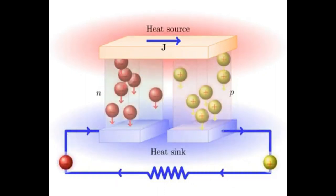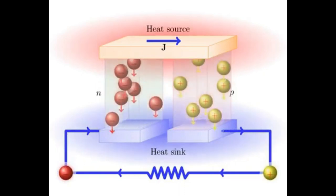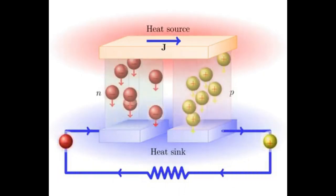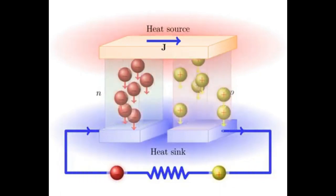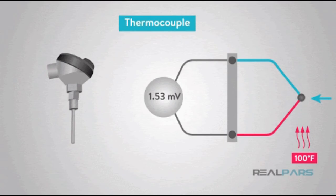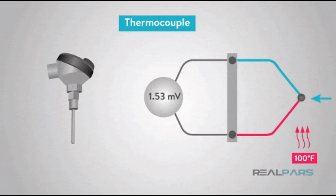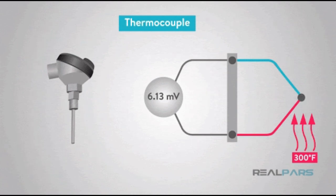It is also used in thermopiles, which is a device composed of a number of thermocouples linked in series or parallel connection to acquire usable voltage. Another use of Seebeck effect is in power generation. Large machines that put out waste heat can use a thermoelectric generator to boost efficiency by turning the heat energy into electricity and putting it back into the system.